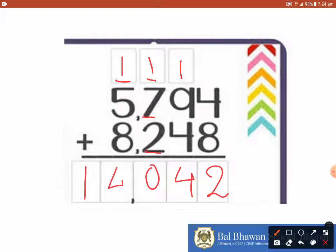So finally, you have got the sum as 14,042. When you will get a sum up to 10,000 place, you should always put a comma.